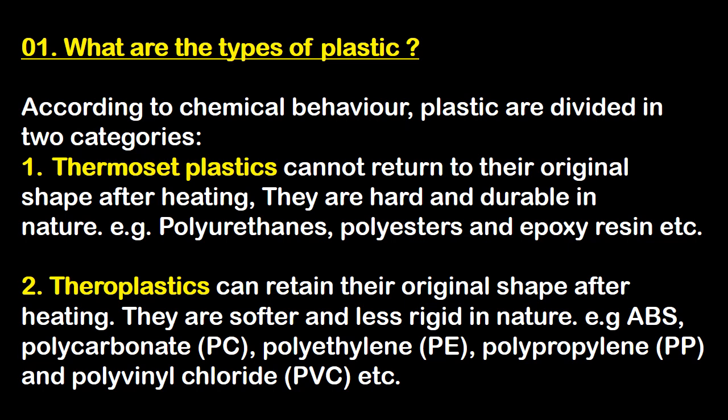Polyurethane, polyester, and epoxy resin, etc. Second is thermoplastic — it can retain its original shape after heating; they are softer and less rigid in nature. For example, ABS (acrylonitrile butadiene styrene), polycarbonate (PC), polyethylene (PE), polypropylene (PP), and polyvinyl chloride (PVC).